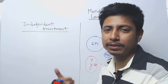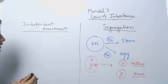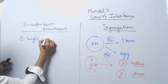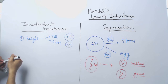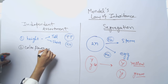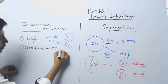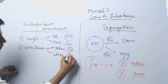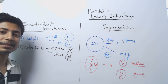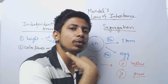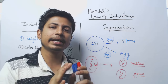They will not influence each other at all. For example, if we take two characteristics — one is the height of the plant (tall, capital T, or short, small t) and the second is the color of the flower (yellow, capital Y, or white, small y) — during the formation of gametes, if there are two different traits, the inheritance of those two traits will not influence each other. They will segregate completely independently without any influence on one another.